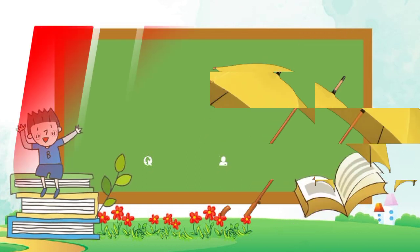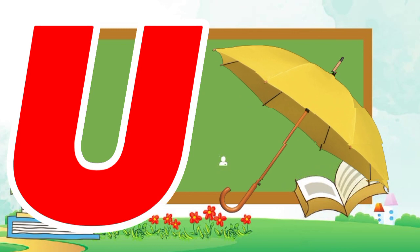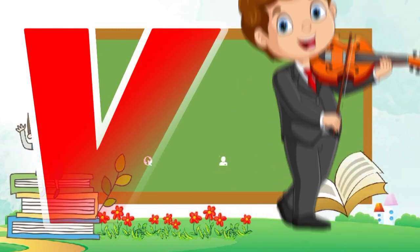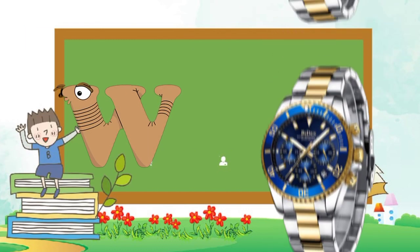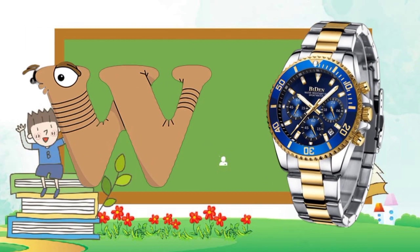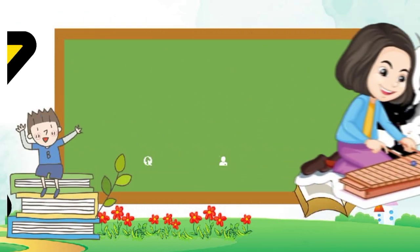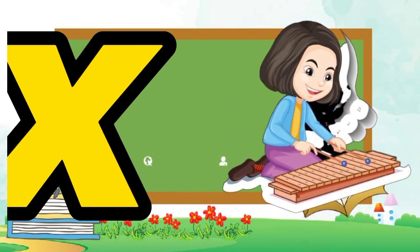U is for umbrella, u-u-umbrella. V is for violin, v-v-violin. W is for watch, w-w-watch. X is for xylophone, x-x-xylophone.